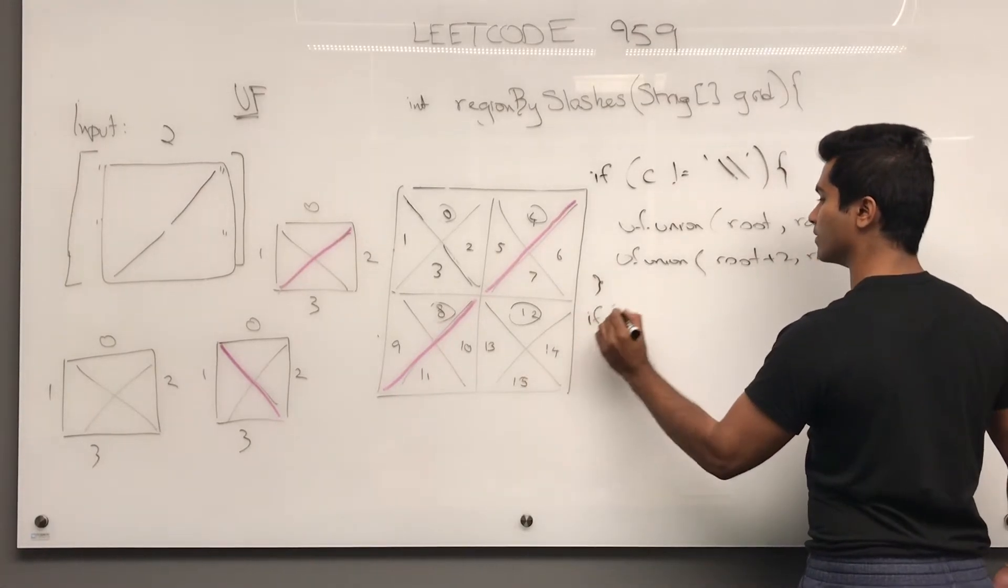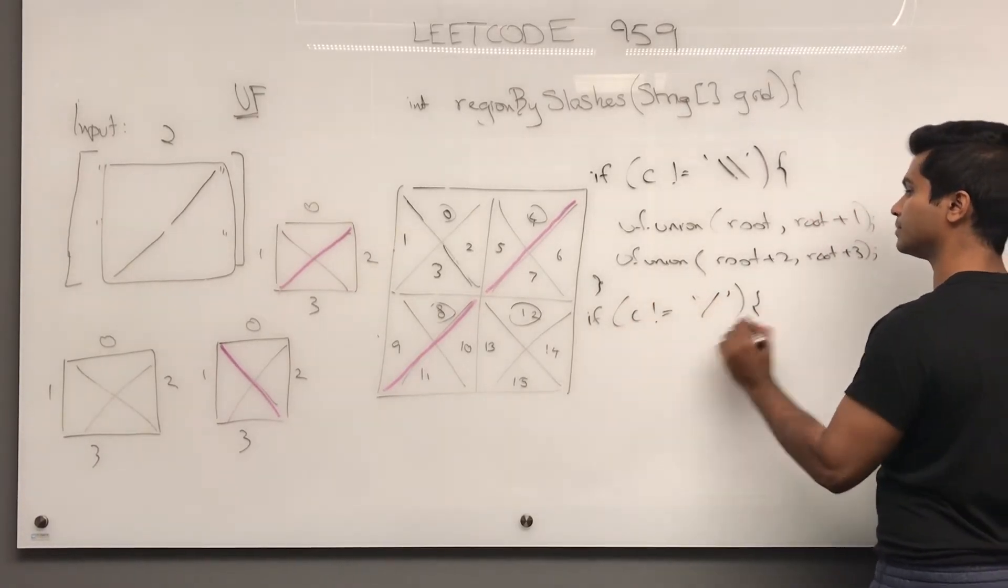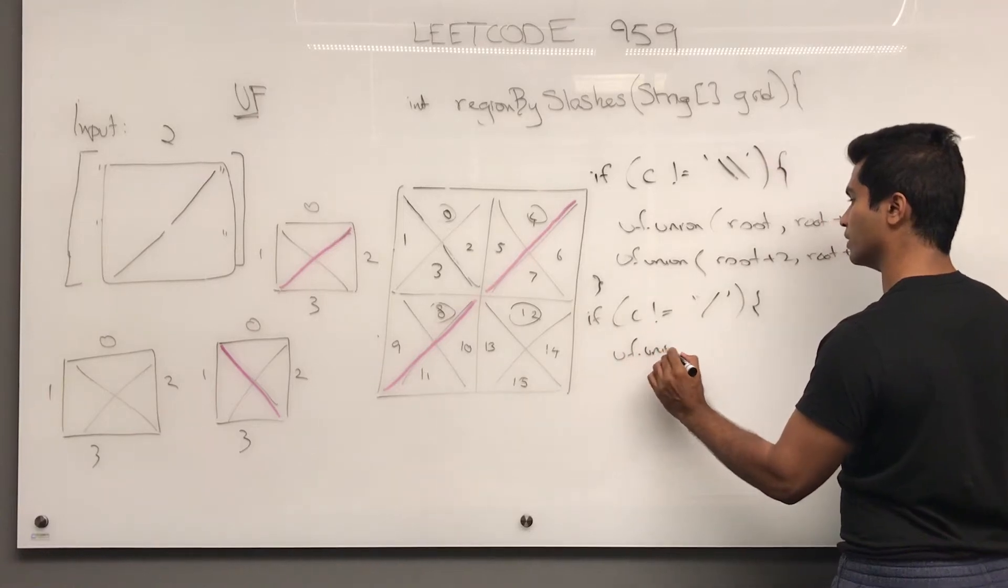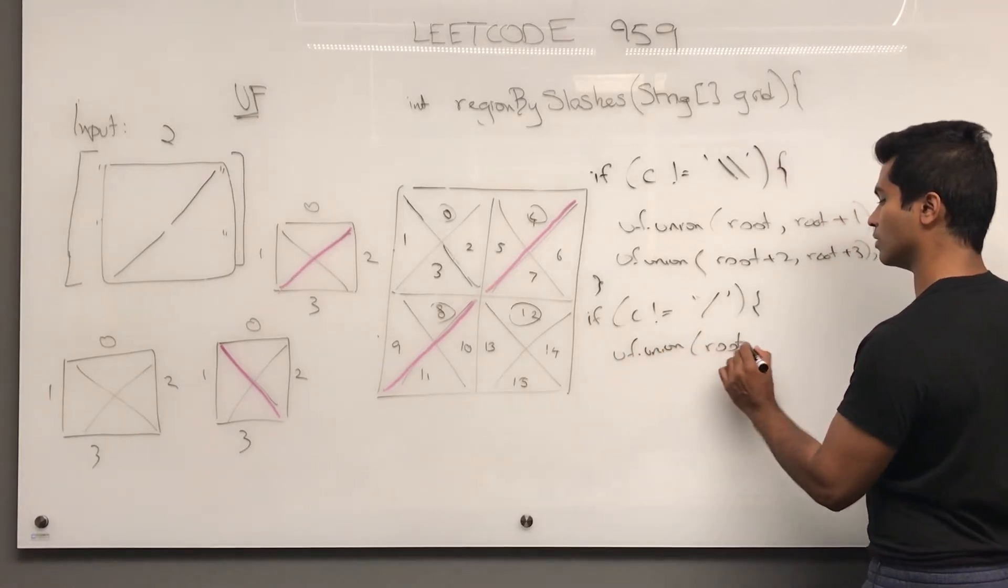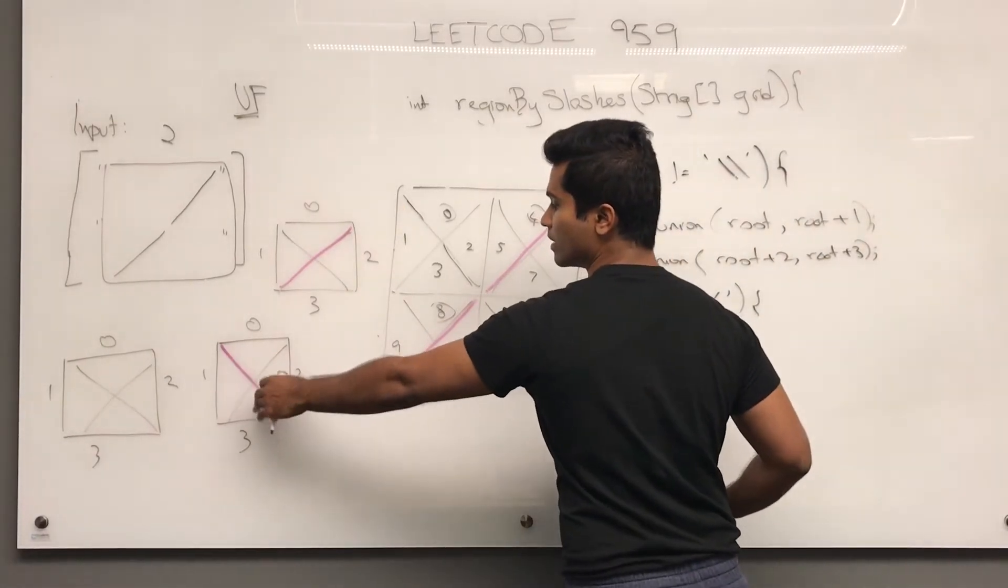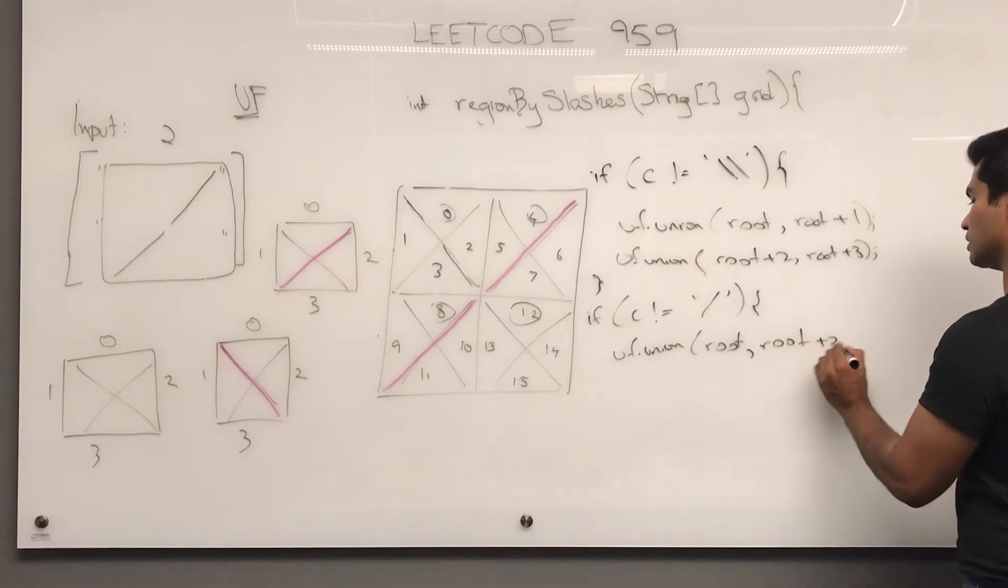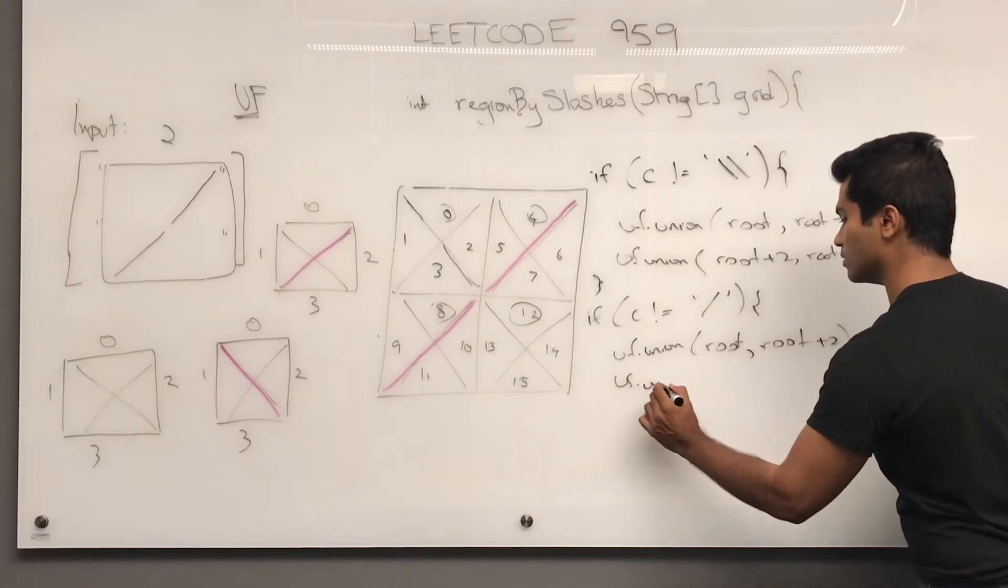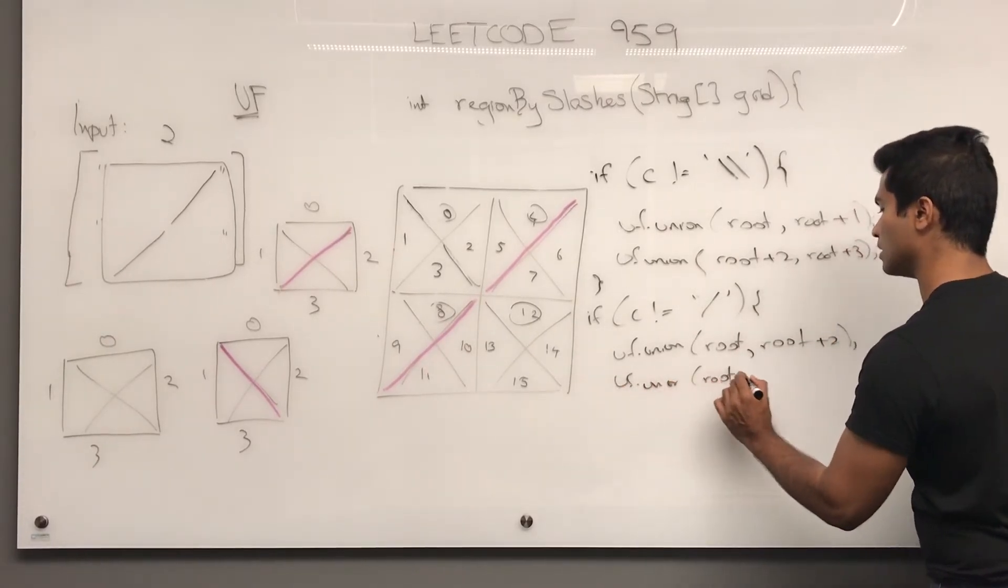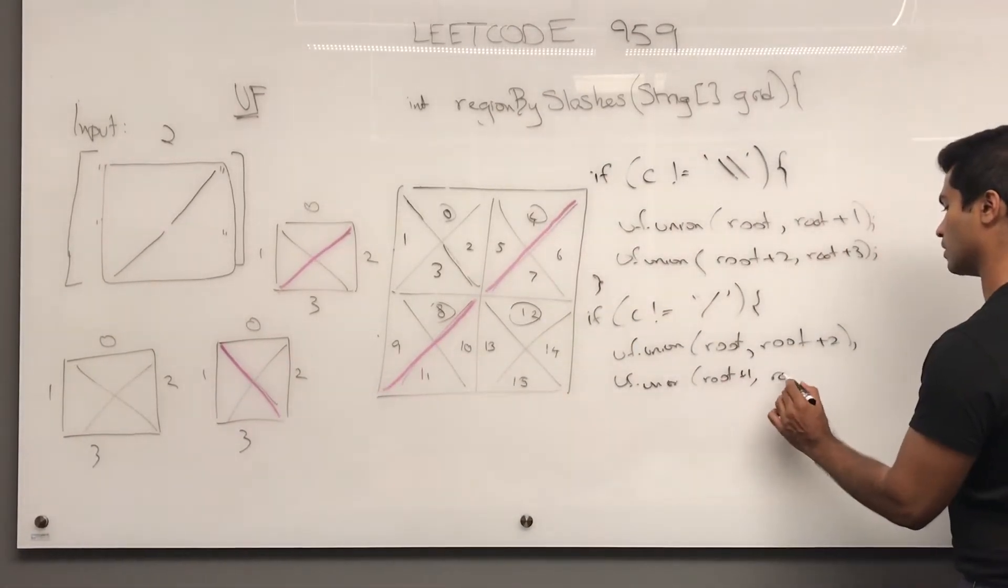And then if c is not equal to this guy, uf dot union, root, now let's check. If it's not this guy, then it could be this, right? So 0 and 2 get put together, so root and root plus 2, and then uf dot union, root, right? Plus 1 and root plus 3, root plus 1 and root plus 3.